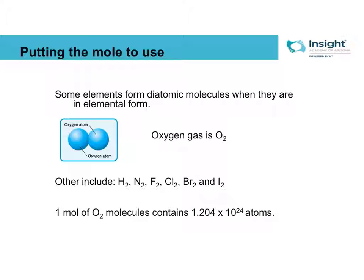Something to keep in mind: there are a few elements that form diatomic molecules in their pure state. These elements you don't find them solo, you always find them paired. Oxygen is one of them, hydrogen, nitrogen, and all of the halogens. Pay attention to the question when you are answering how many atoms you have. If you have a mole of oxygen molecules, a mole of O2s, you have 6.022 times 10 to the 23rd O2s.